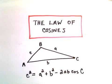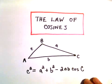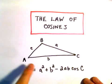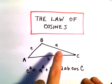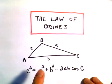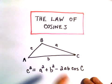Alright, in this video I want to do an example related to the law of cosines. The law of cosines says if you have a triangle with side lengths A, B, and C, and those are opposite the angles A, B, and C.